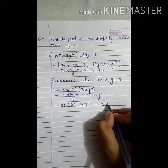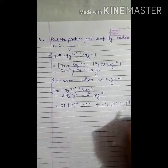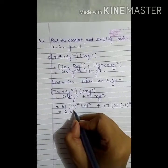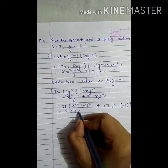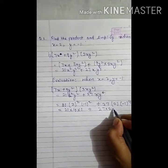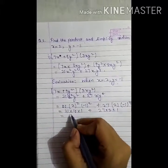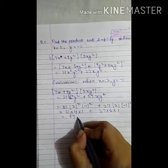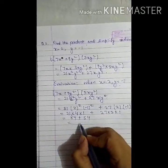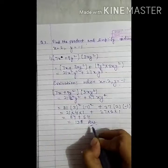Plus 27 times 2 times minus 1 to the power 4, which equals 1. So it is 21 multiplied by 4 times 1, which is 84. Plus 27 multiplied by 2, which is 54. It is equal to 138.